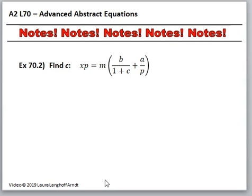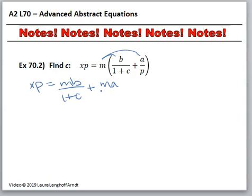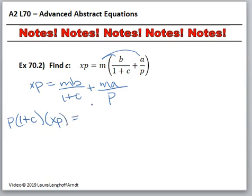Go ahead and give yourself a chance to try it on your own. Okay, my turn. First things first — distributive property is what we do every time we see parentheses. So we're going to have MB over 1 plus C, plus MA over E. That stays the same. Now, if what we're going to have to do is get rid of our denominator — which is really what we want — that means we're going to have to multiply both sides by 1 plus C times P. So it's going to look a little weird: 1 plus C and P times XP equals. Now remember, this would cancel and I'm left with P over here, and this would cancel and I'm left with 1 plus C over here. That's going to complicate things a little bit.